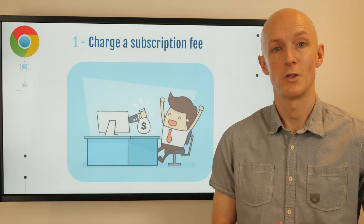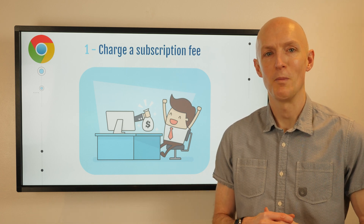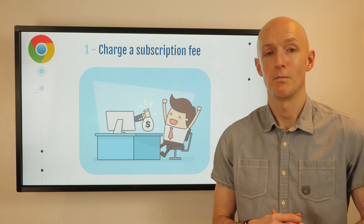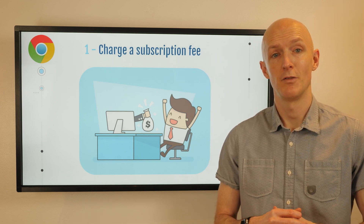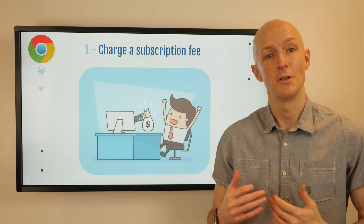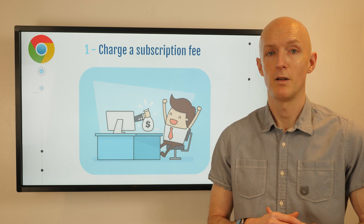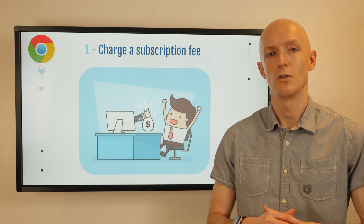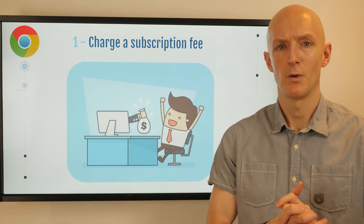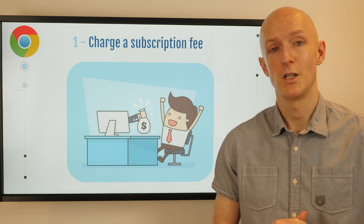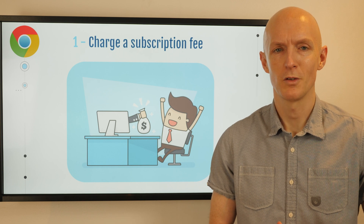First up is to charge a subscription fee, which is the most obvious one, but if your extension helps make people money or saves them a lot of time, they'll happily pay you a recurring fee if there's a clear value win for them. You can offer a monthly, yearly, or lifetime plan and charge users for access. Monthly plans tend to be the most popular as they have the lowest barrier to entry and usually represent the best value-to-risk ratio for your customers.